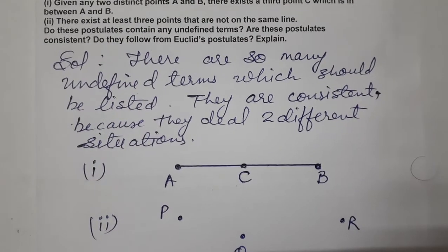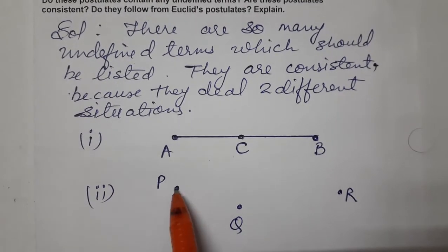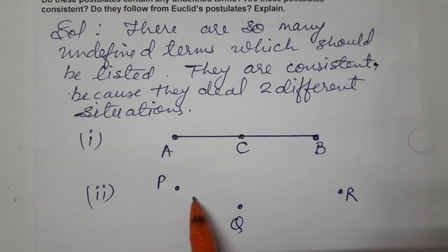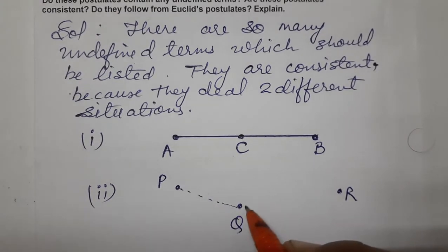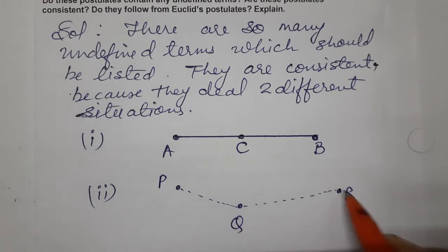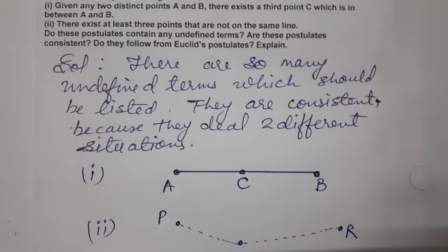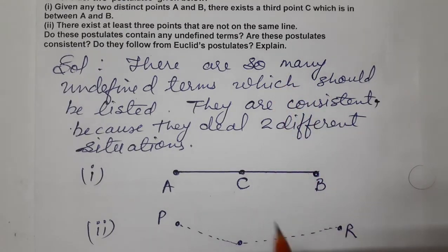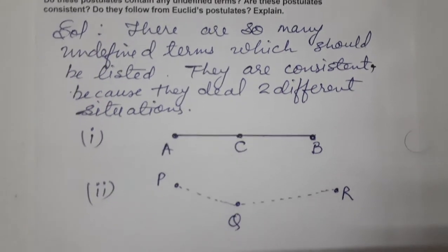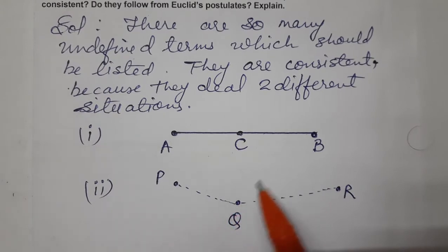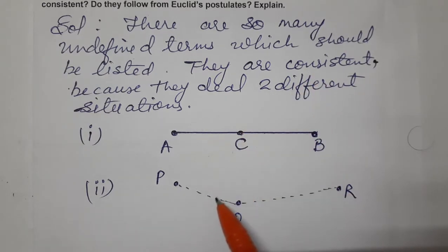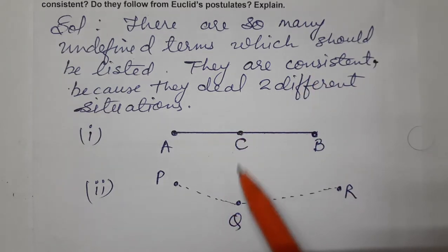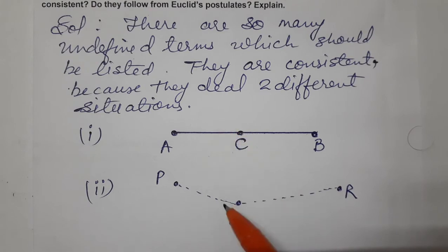Now the second postulate: there exist at least three points that are not on the same line. These three points are not on the same line. If I join them, I will get two lines — joining two of them gives one line, and the other gives another line. So this second postulate is also correct. Both postulates are consistent because they represent two different situations.